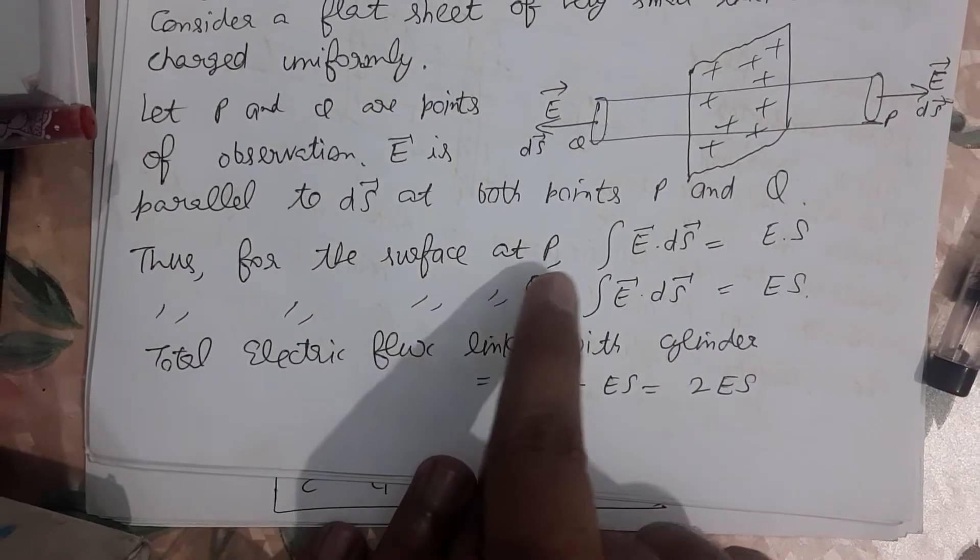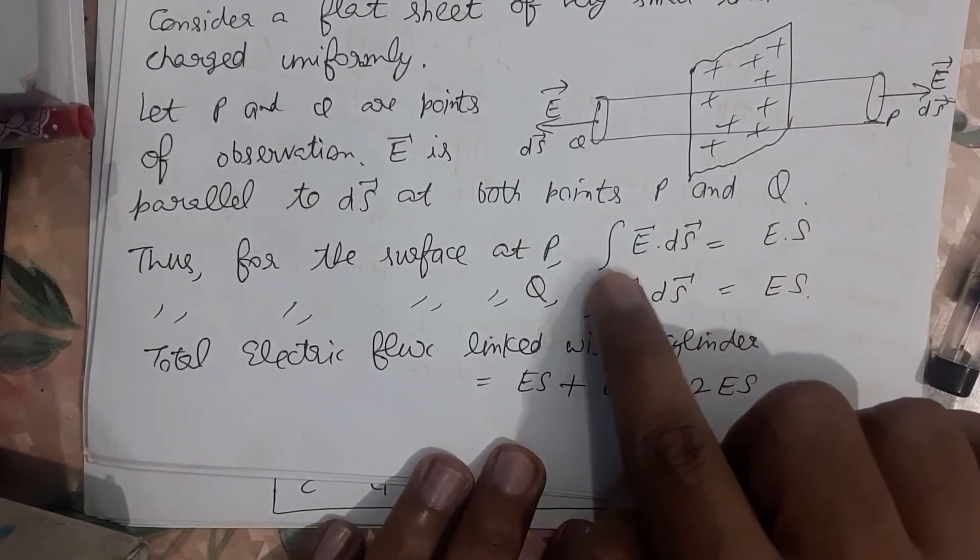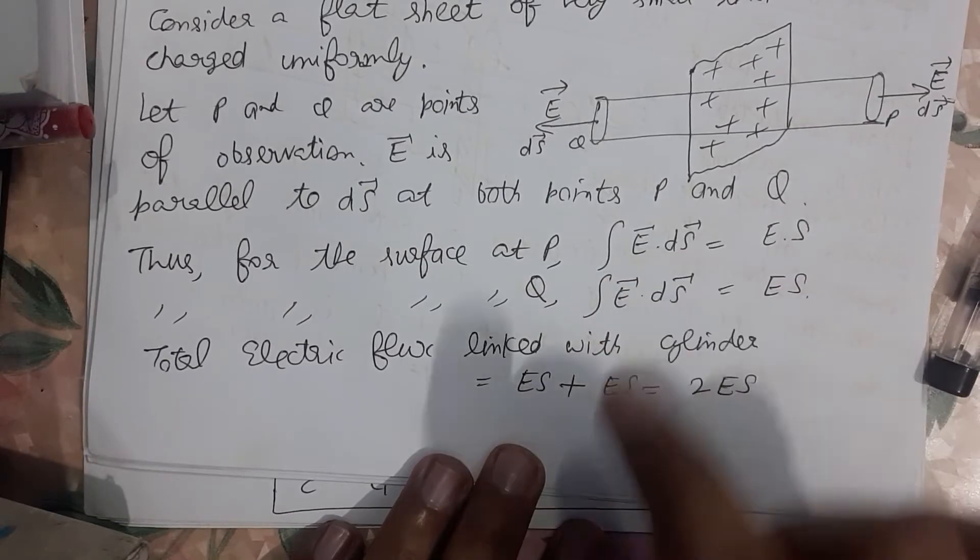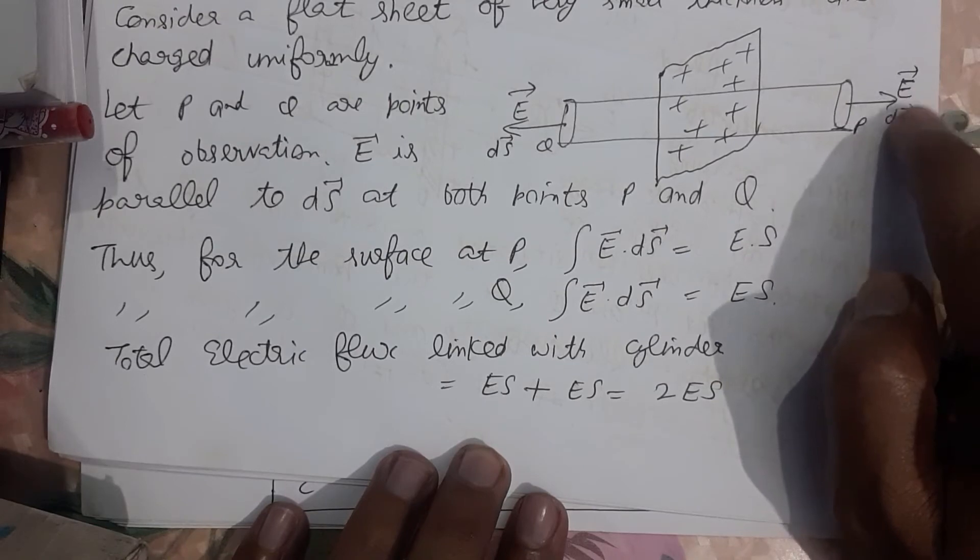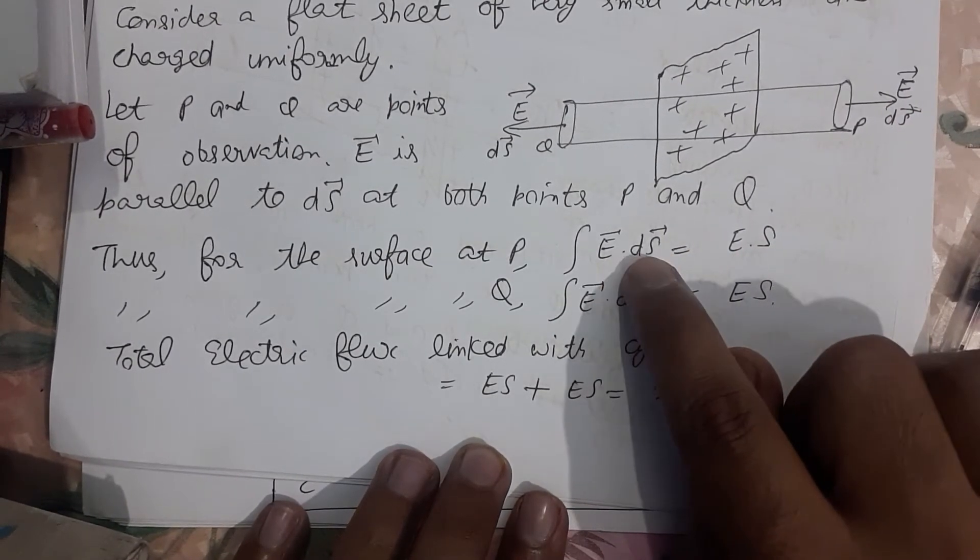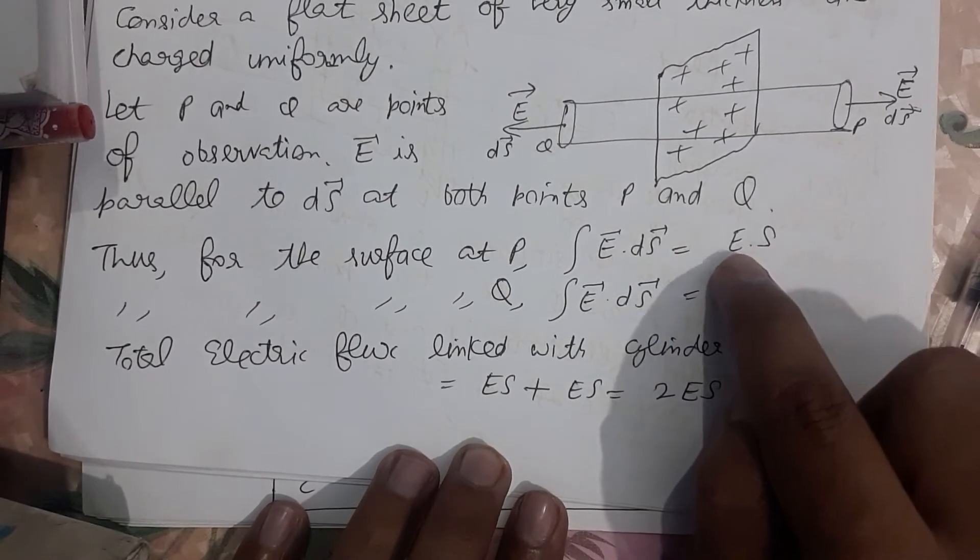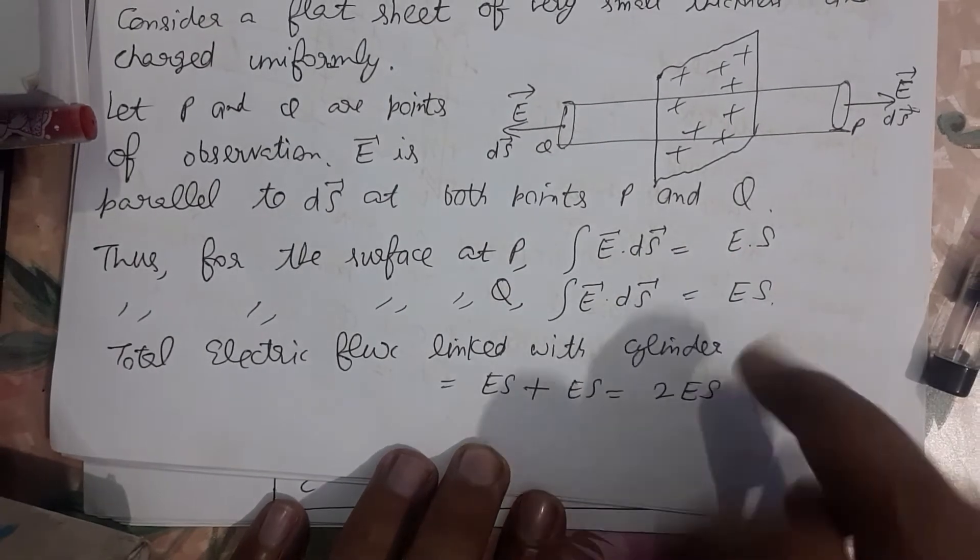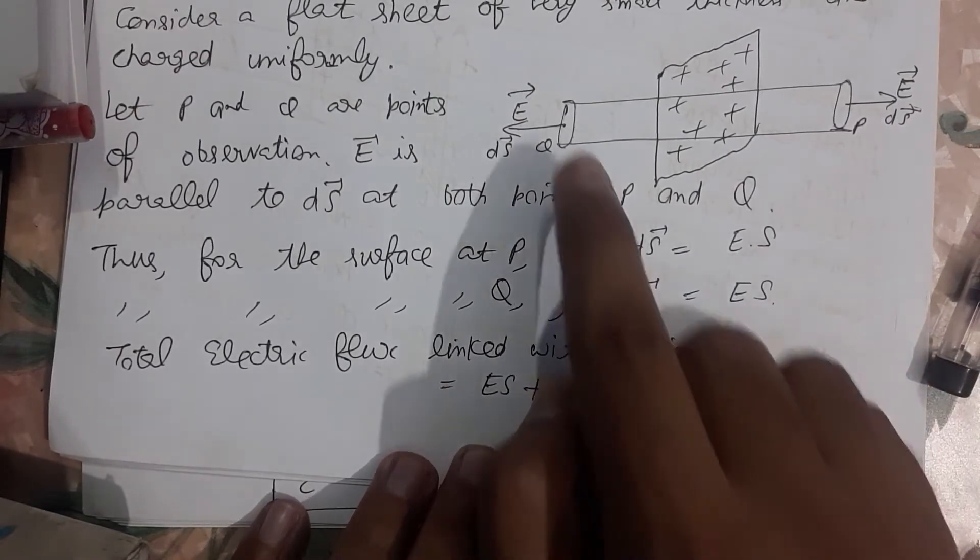First of all, flux at point P. Formula is integration of E vector dot ds vector. Since the angle between them is always 0 degrees, we will have E ds cos 0 degree, which means E ds, or E into s, where s means surface area.